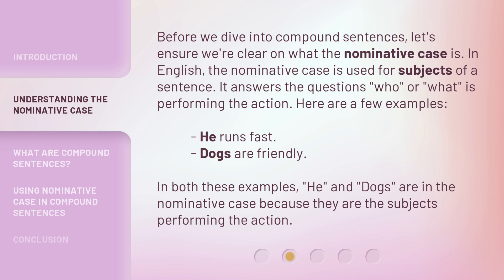Before we dive into compound sentences, let's ensure we're clear on what the nominative case is. In English, the nominative case is used for subjects of a sentence. It answers the question: who or what is performing the action. Here are a few examples: 'He runs fast.' 'Dogs are friendly.' In both these examples, 'he' and 'dogs' are in the nominative case because they are the subjects performing the action.